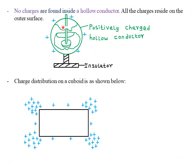Next, we look at a hollow conductor. A hollow conductor is like a circular conductor in two dimensions, meaning there are no materials in between. No charges are found inside a hollow conductor — all the charges reside on the outer surface. The charges always distribute themselves on the outer surface, but no charge will exist on the inner part of a hollow conductor.